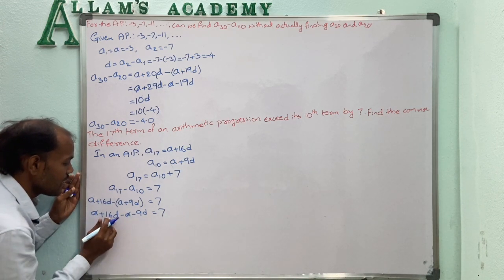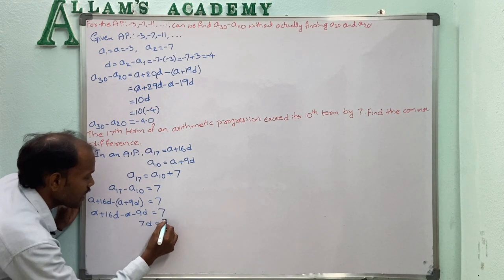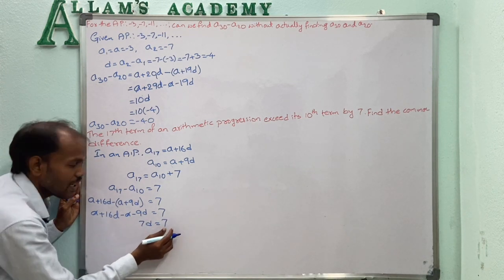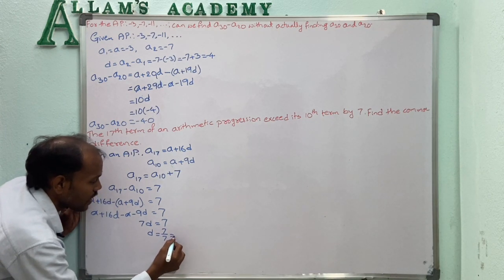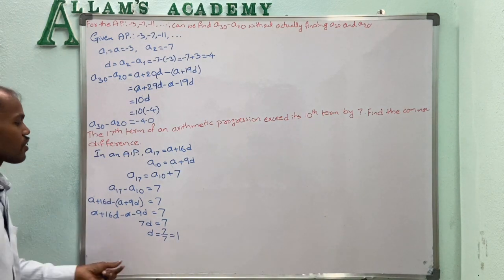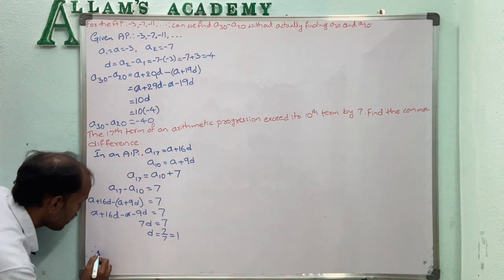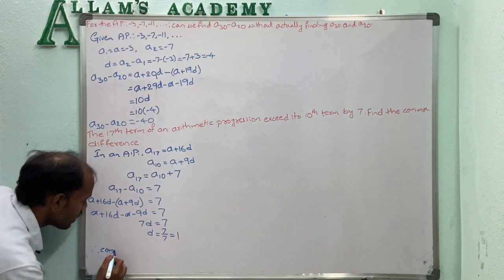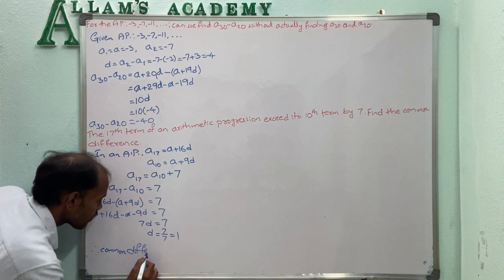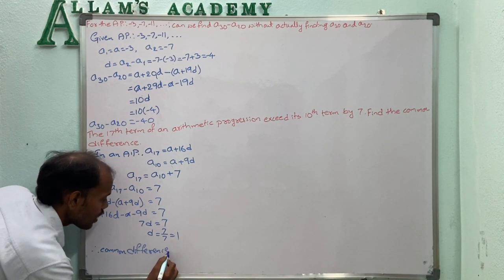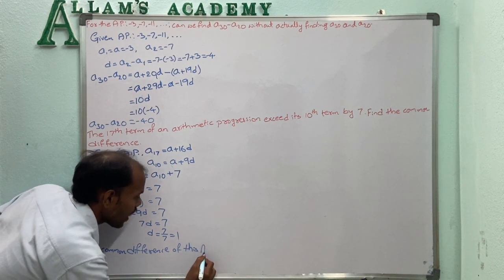A minus A gets cancelled. 16D minus 9D is 7D. So 7D equals 7. Dividing both sides by 7 gives D equals 1. The common difference of this AP is 1.